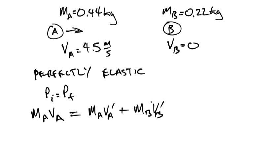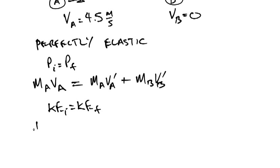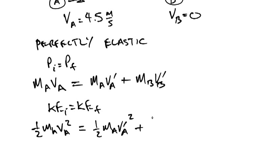In addition, we have conservation of kinetic energy, since kinetic energy initial equals kinetic energy final. That gives us: one-half MA·VA squared equals one-half MA·VA prime squared plus one-half MB·VB prime squared.